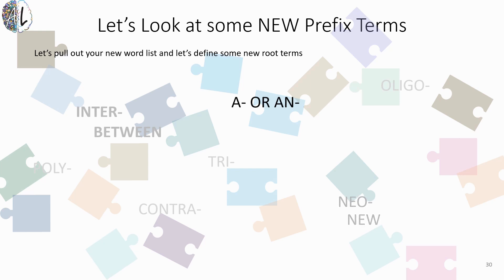Next we have a two-for-one: 'a' or 'an.' 'A' is the prefix if you are starting the root term with a consonant; 'an' is the prefix if you are starting the root term with a vowel. They do mean the same thing — it's just what we attach to make pronunciation and readability much easier. Go ahead and take a look at your word list and let me know what the 'a' or 'an' prefix means.